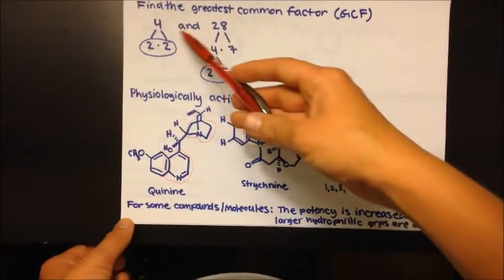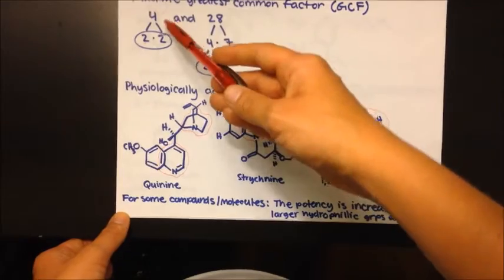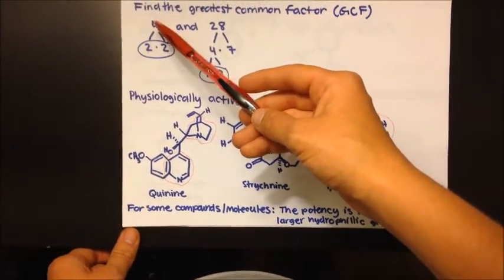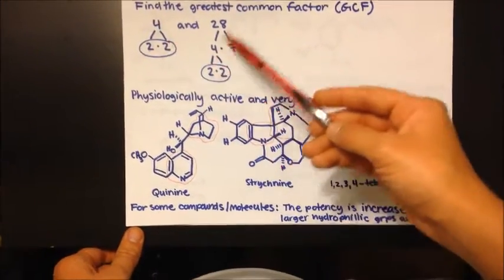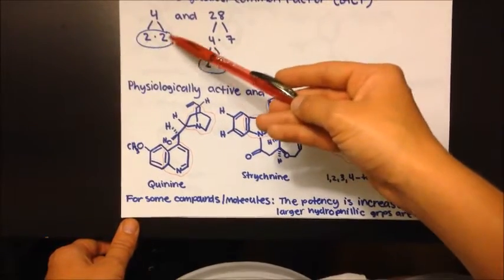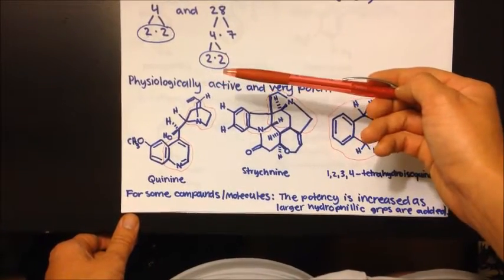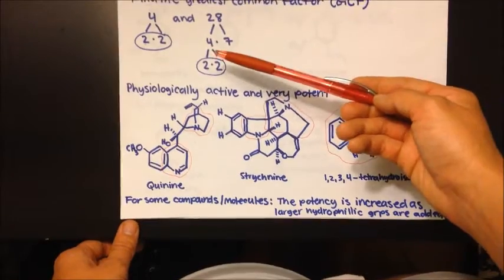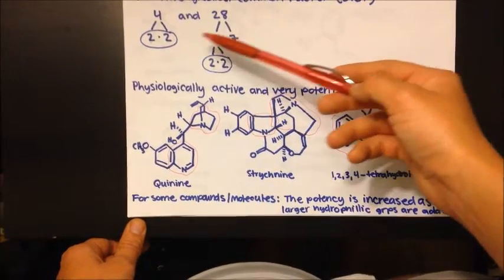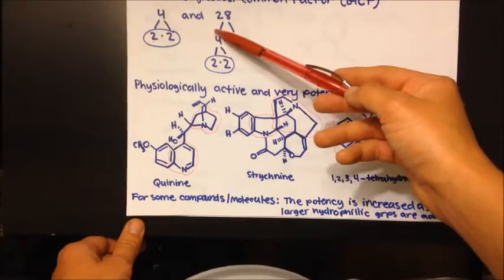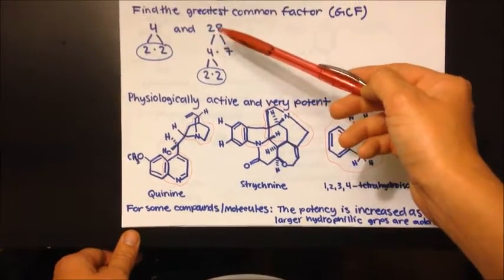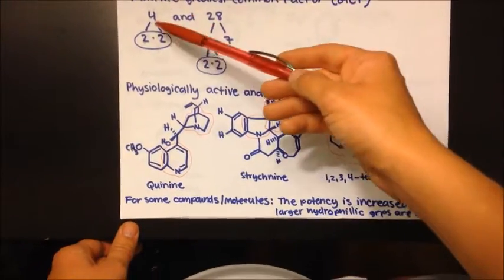We're going to find the greatest common factor of the following two numbers: 4 and 28. We're going to do this by using a factor tree to factor each number down to their prime factorization — their features. So we have 2 times 2, and 2 times 2 times 7, and we can see that the largest number these two numbers have in common is the number 4.